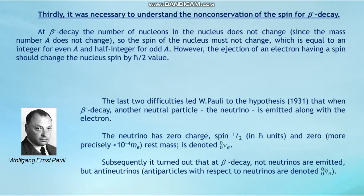The third difficulty concerns the non-conservation of spin during beta minus decay. In beta minus decay, the number of nucleons in the nucleus does not change since the mass number A does not change. Therefore the spin of the nucleus must not change — it equals an integer for even A and a half-integer for odd A. However, the ejection of an electron, which has spin, should change the nuclear spin by ℏ/2.